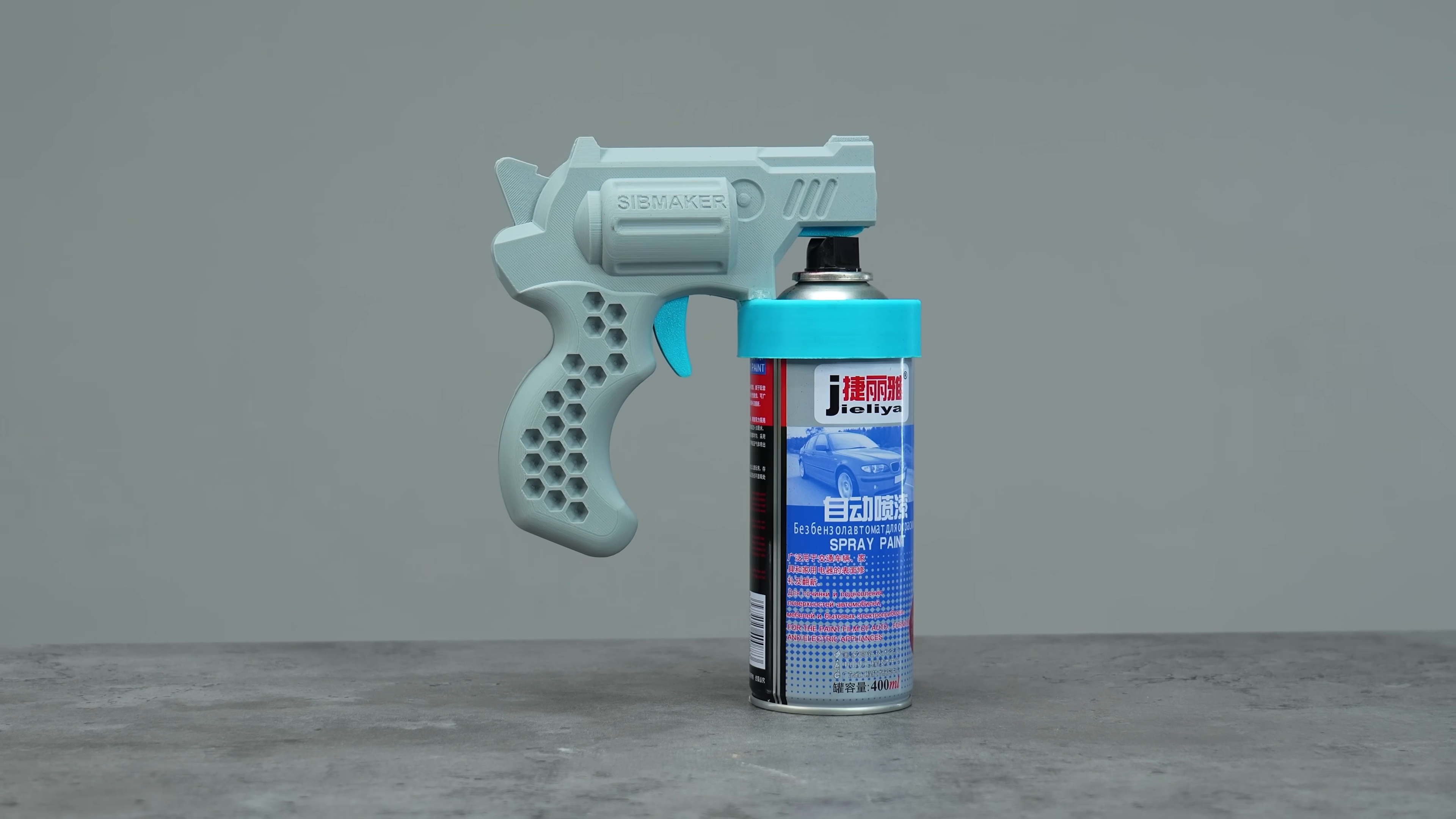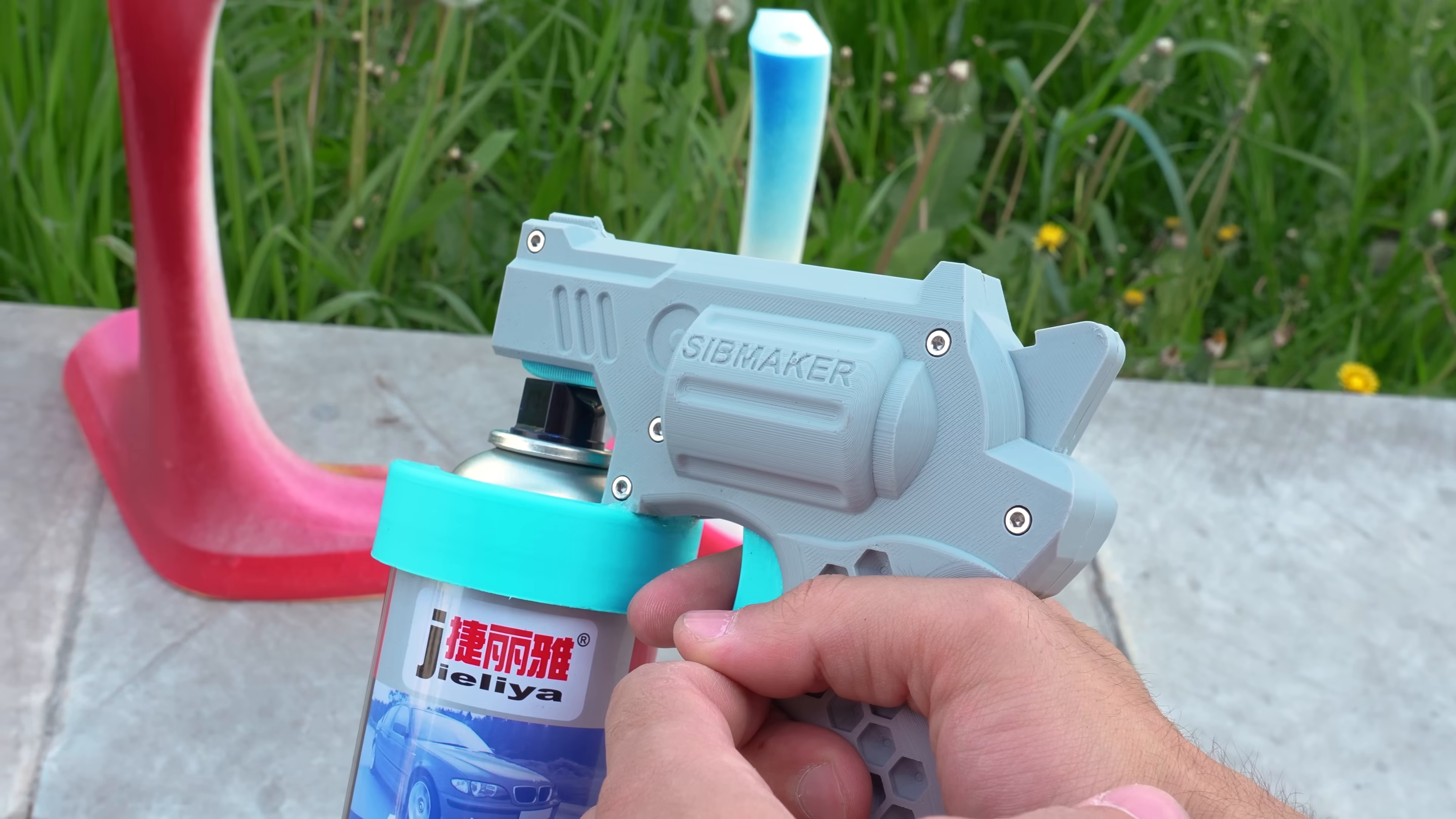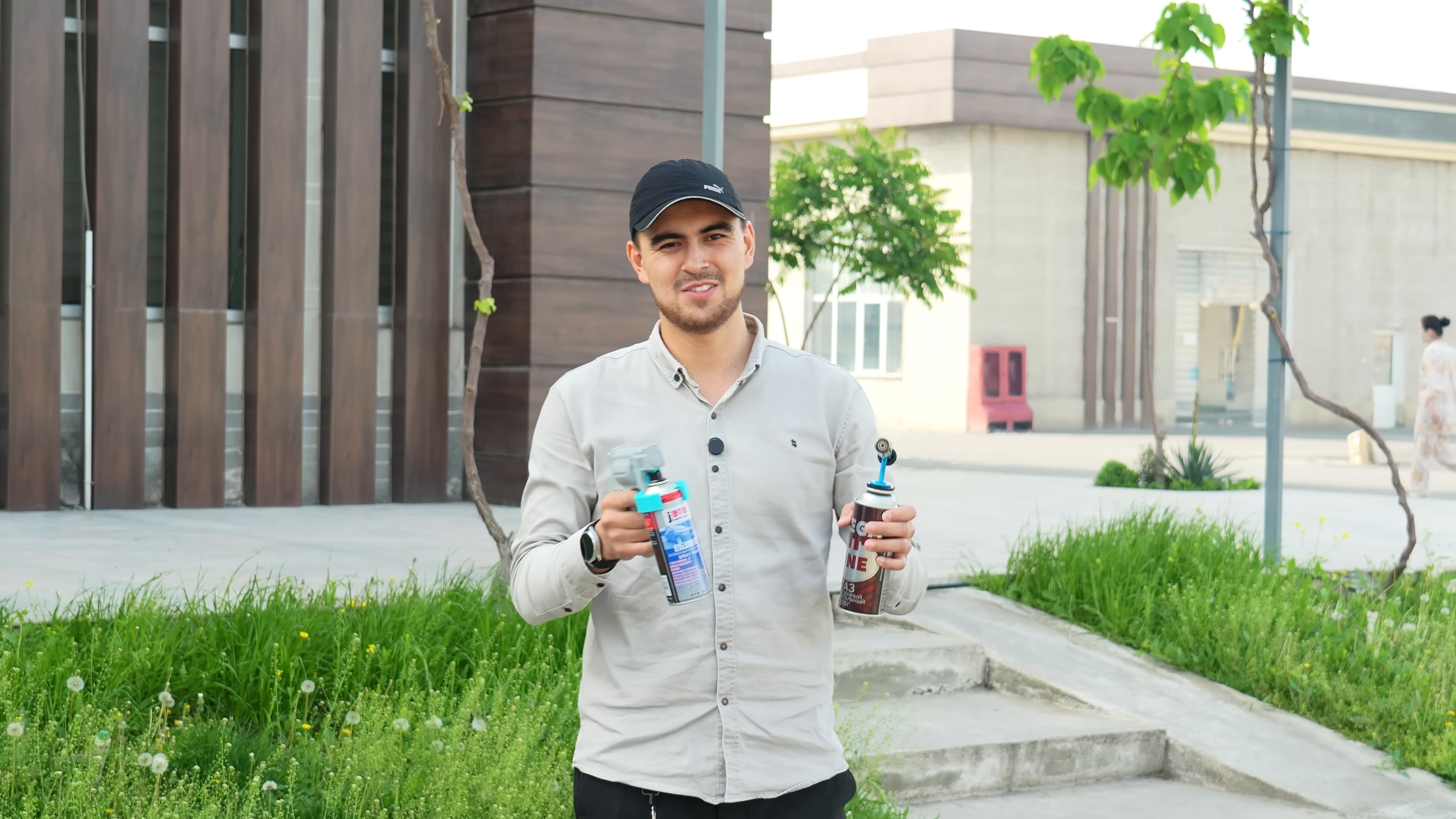The thing we are printing should solve this problem. Introducing the paint spray gun handle, a simple yet super practical tool that turns your regular spray can into a comfortable gun-style sprayer. It's not just functional, it actually makes spray painting fun. I always wanted to try this in my childhood, let's try.